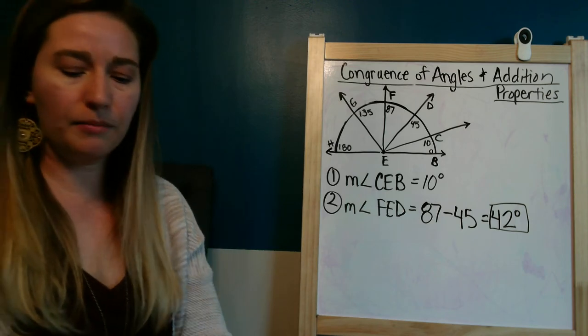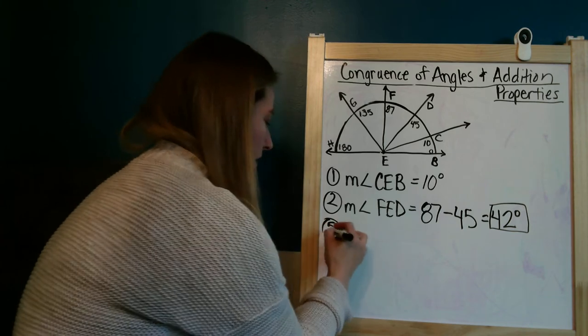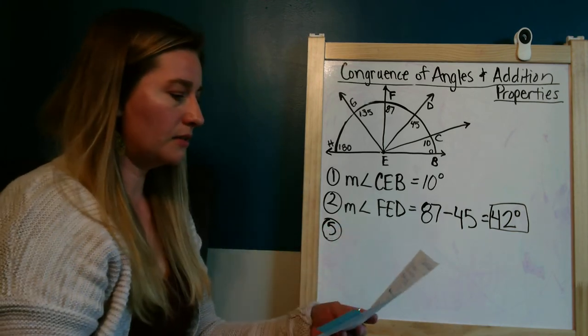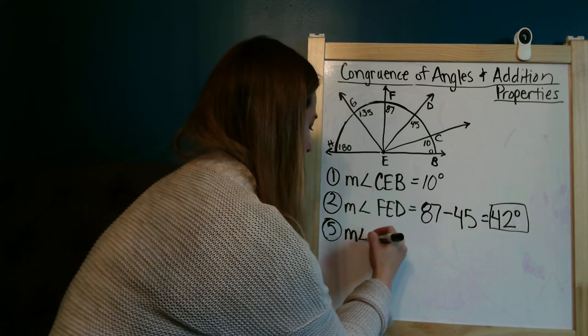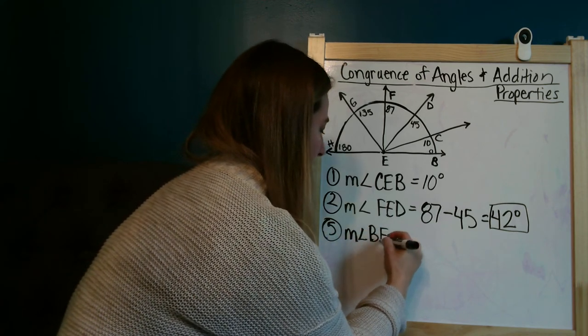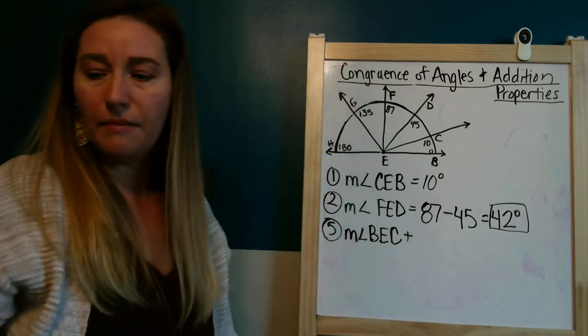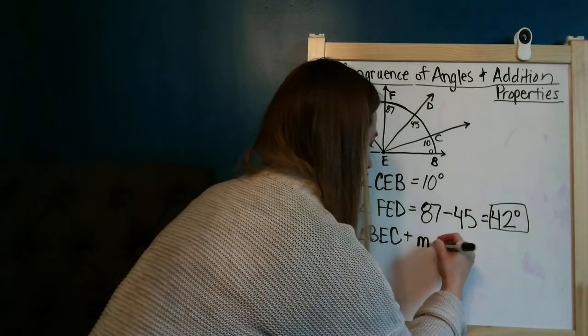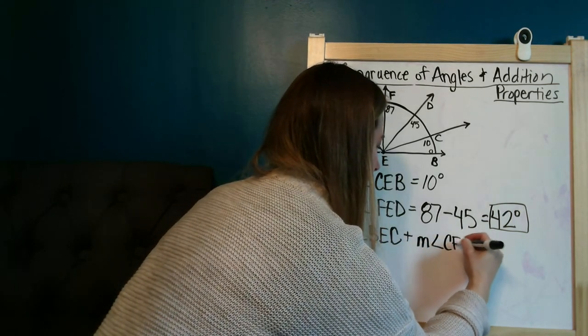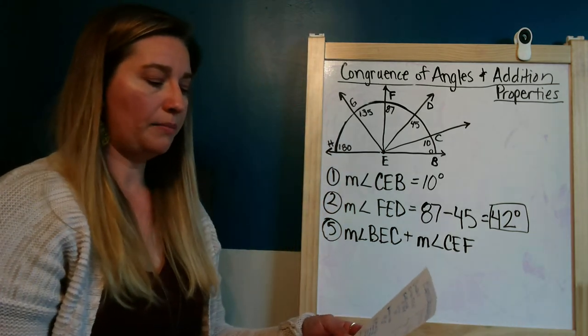Okay, I want to look at number five. Number five asks us to find the measure of BEC plus the measure of angle CEF. And this is actually going to be a multi-step process here.